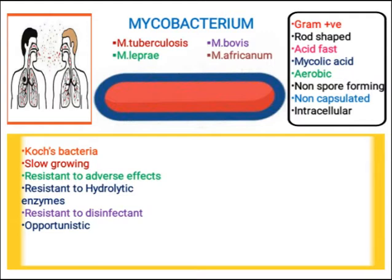Mycobacterium causes an opportunistic disease. This means it more commonly affects patients whose immune system is weak. In patients with a weakened immune system, mycobacterium can cause opportunistic infection.